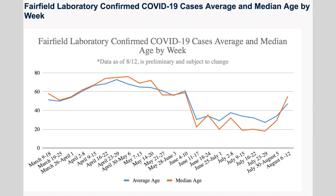The next graph is one we put out maybe a month or so ago. It is our age graph, showing the average and the median age. We have both because the average can be skewed by highs and lows, so we wanted to give you both to give a representation of the average age in the community right now of our COVID-19 cases.